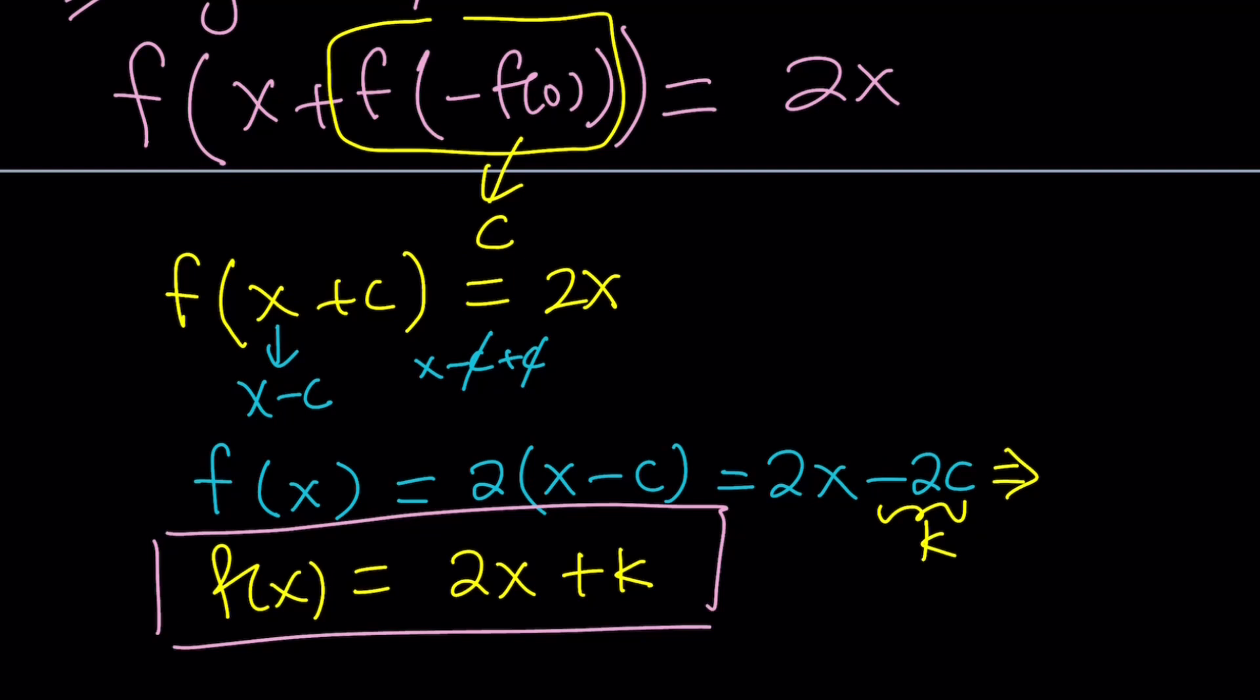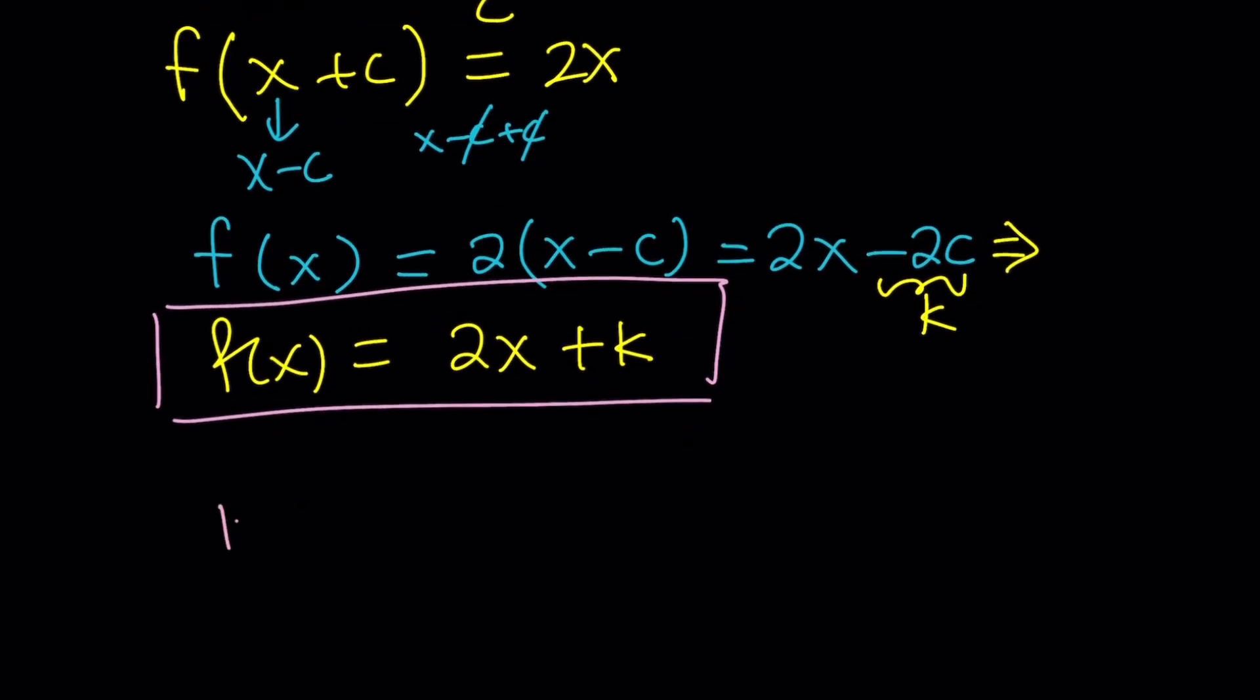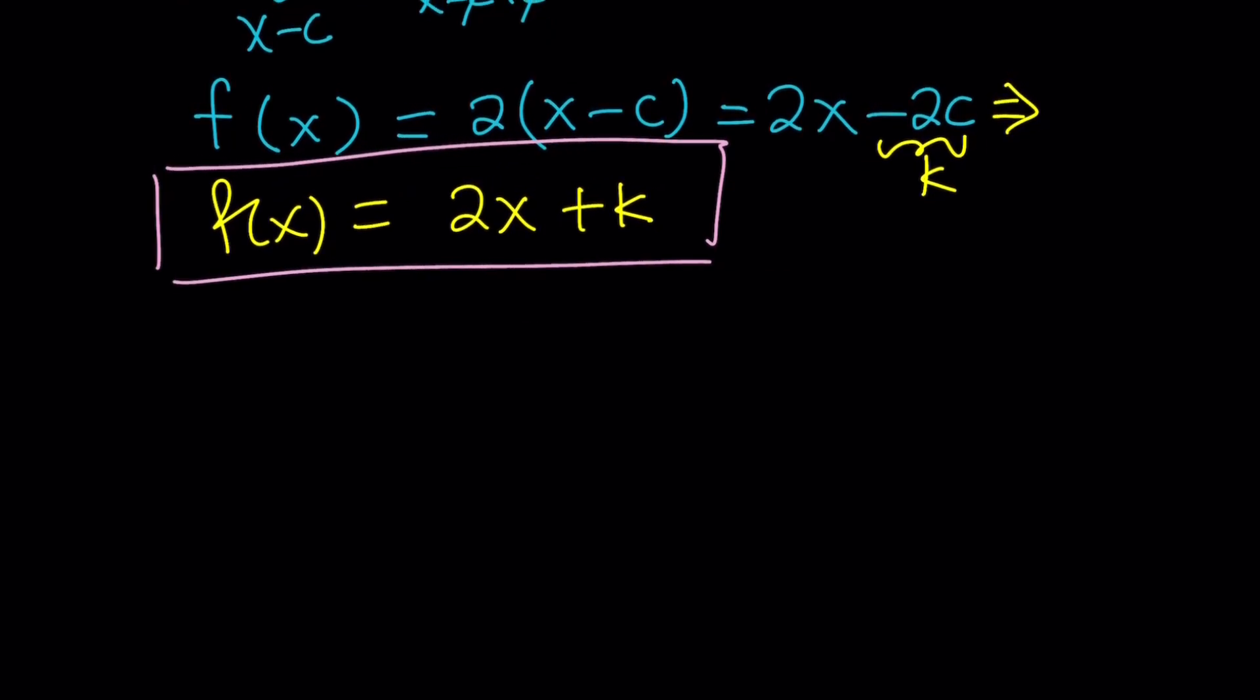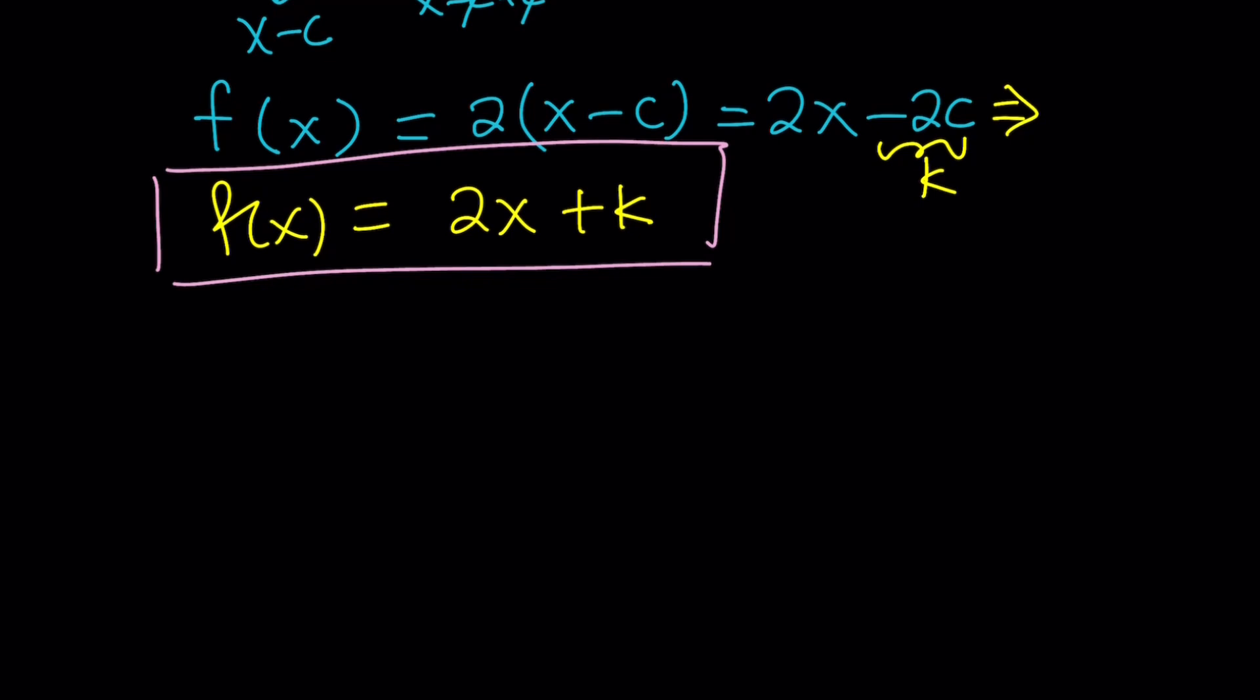We can go ahead and plug it into the original function and try to find the k from there. Because once I find k, then I got f of x. For example, if k is equal to 3, then f of x will be 2x plus 3. But first, I got to find k. I don't know what it is at this point. Pretend I don't. So let's see how this goes. I'm going to go ahead and plug it into my original equation, which was f of x plus f of y minus f of z equals 2x plus 4y minus 8z.